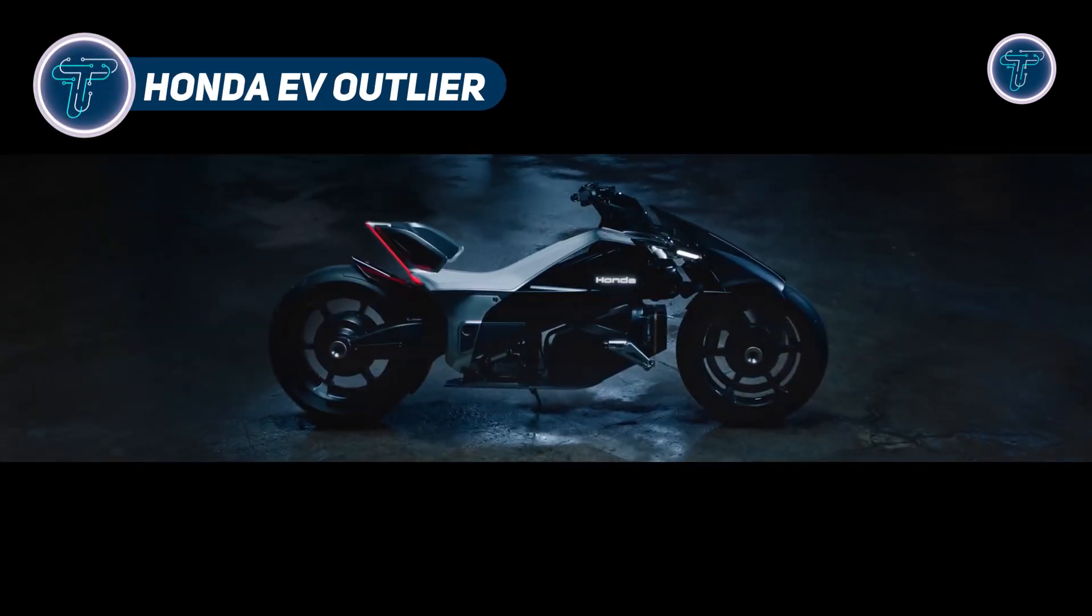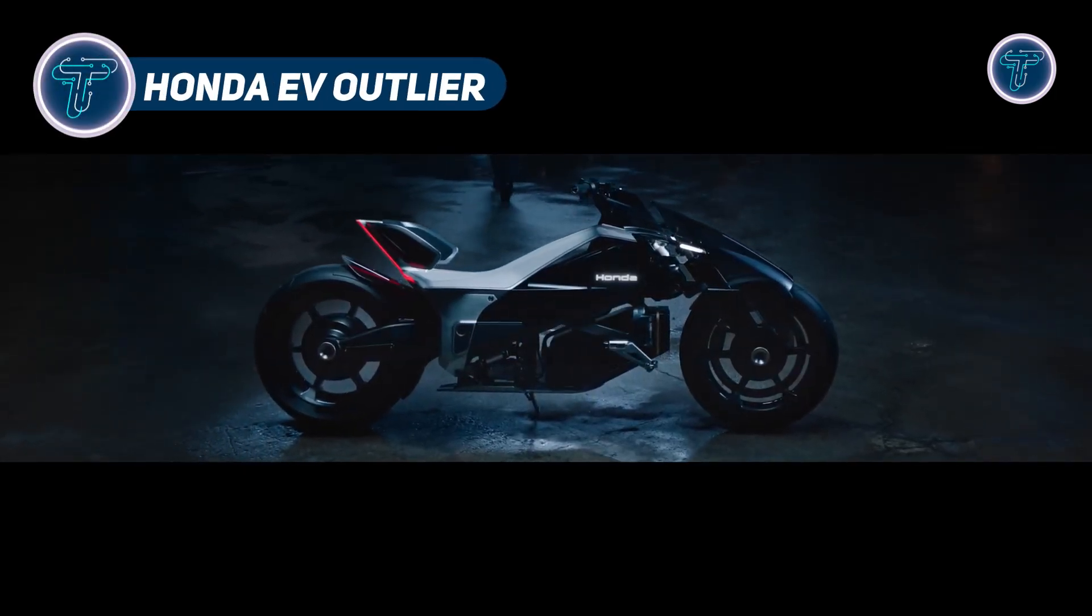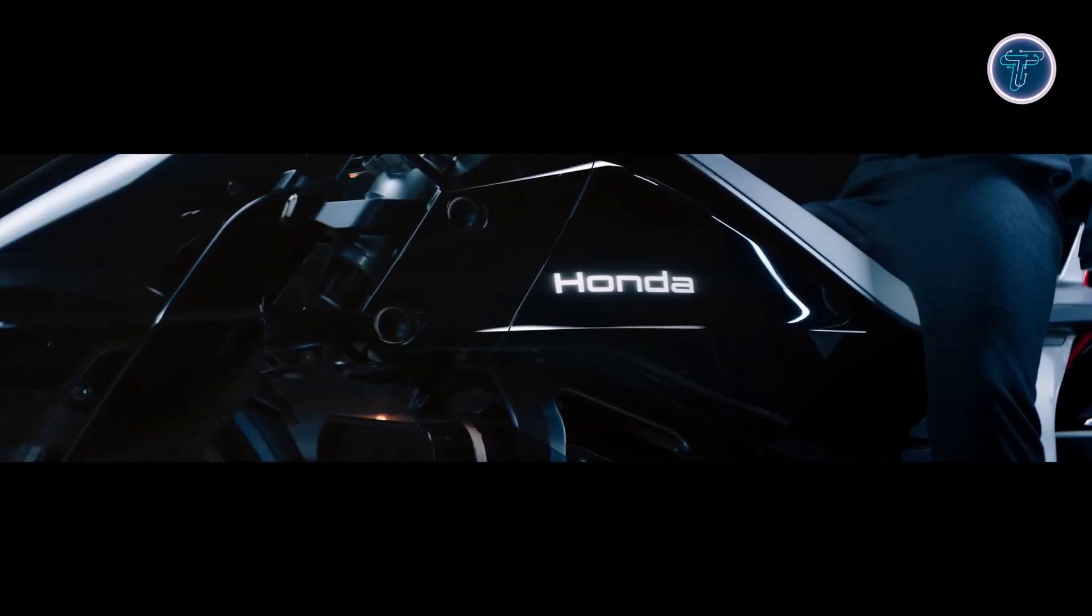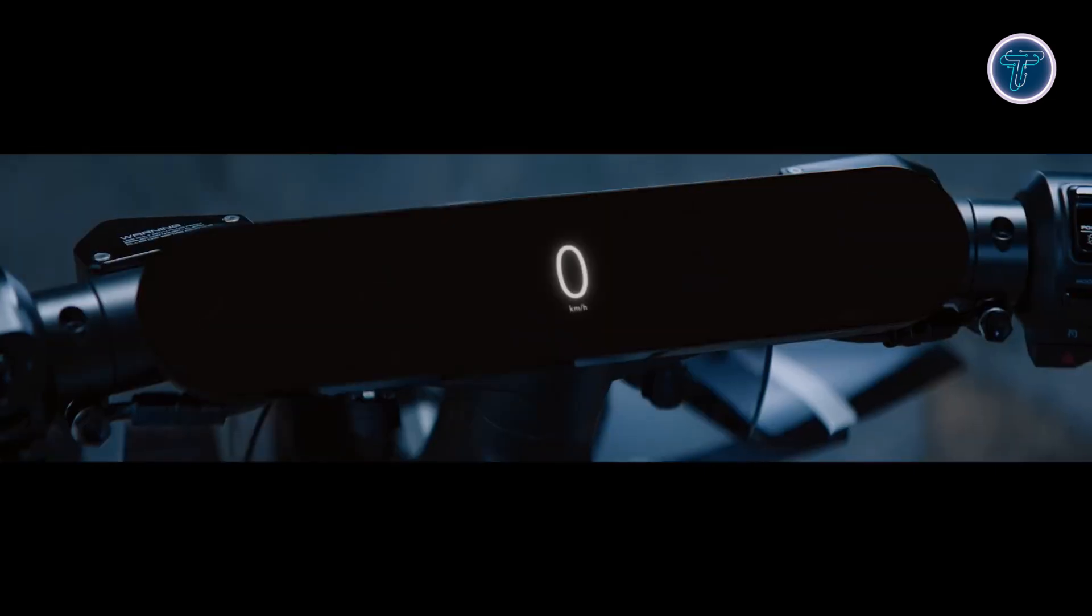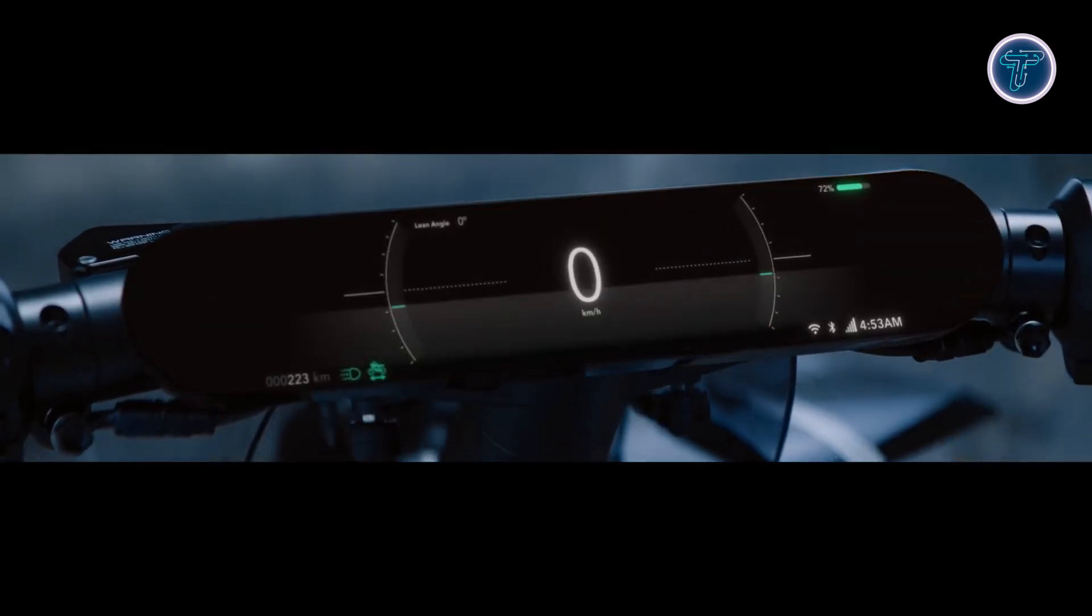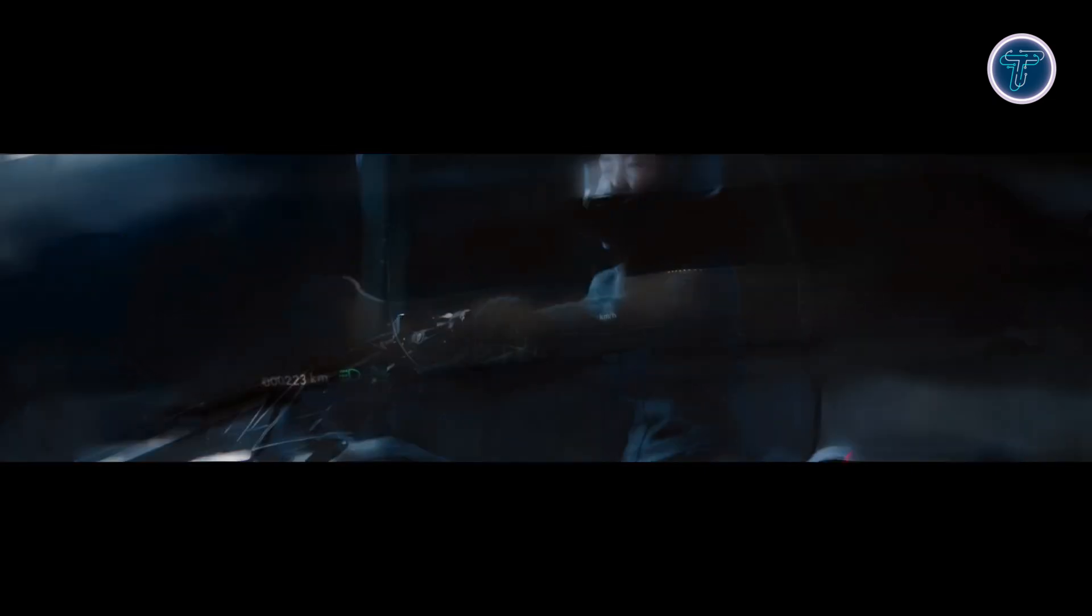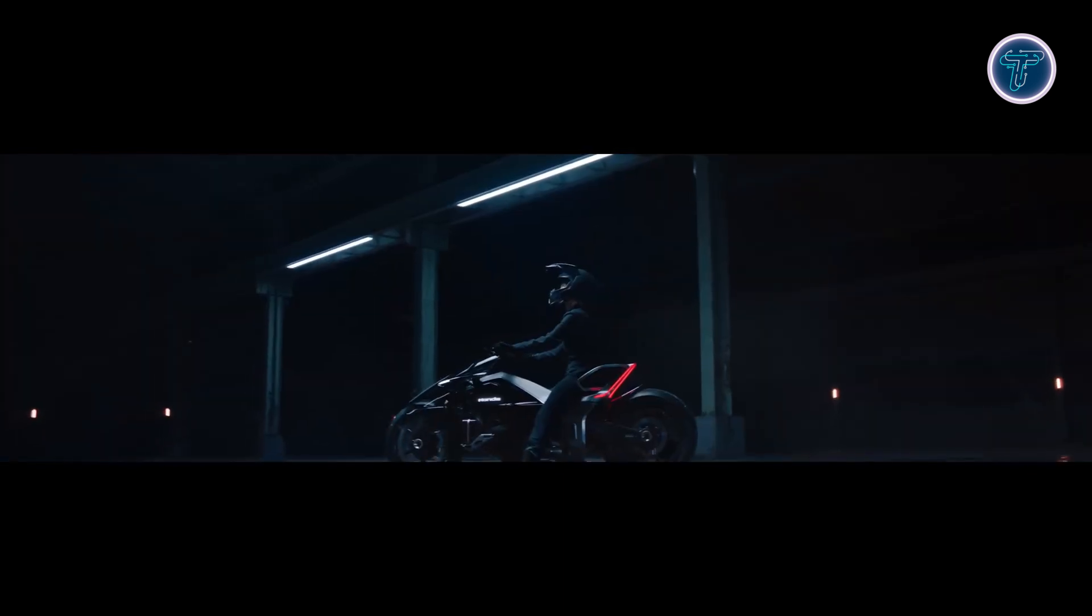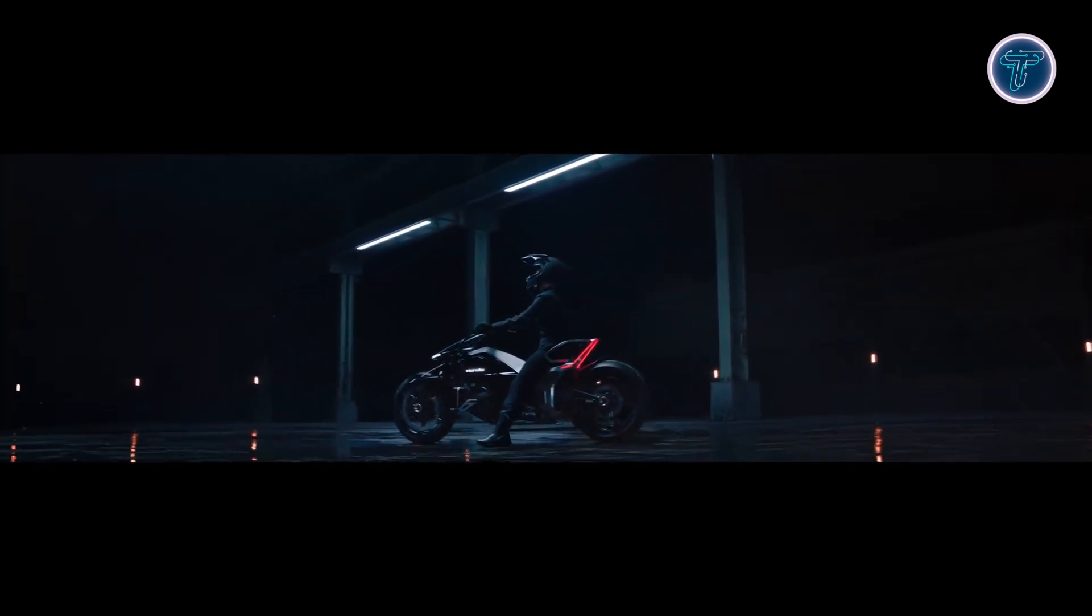Honda EV Outlier. The Honda EV Outlier concept is a radical vision for electric motorcycles, debuting at the Japan Mobility Show 2025. Its standout feature is in-wheel motors on both front and rear wheels, eliminating traditional chains and belts while freeing space for a central battery pack. The chassis uses a double wishbone front suspension and rear monoshock, lowering the seat height and improving balance for riders.